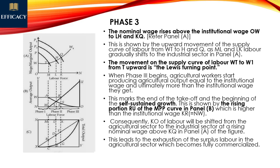What happens in this movement in Phase 2 is a self-sustained growth in the economy, because the marginal productivity curve — the TH portion denoted as FL — shows that marginal productivity of labour has increased from zero. As marginal productivity increases to RU, this rising portion from T to W1 in the industrial sector coincides with the marginal physical productivity curve of the agriculture sector. This is the most important observation of the model.